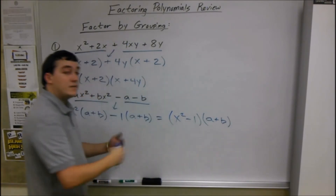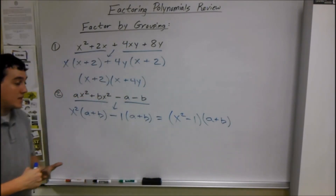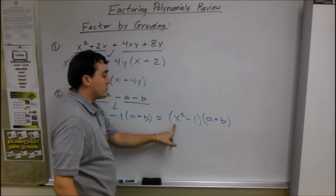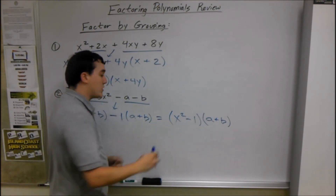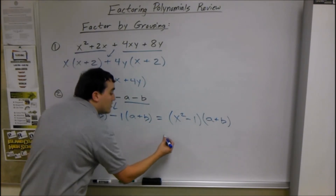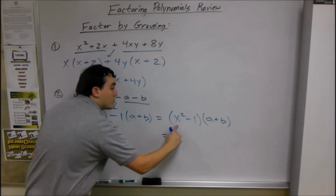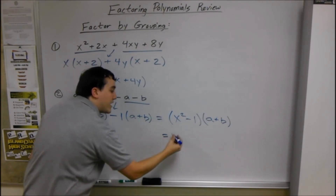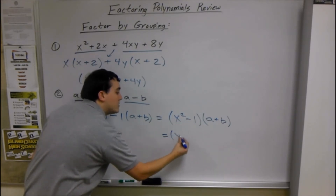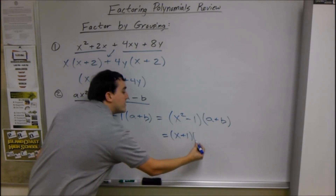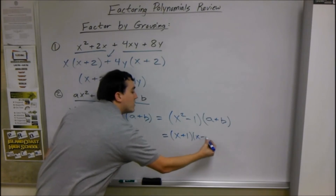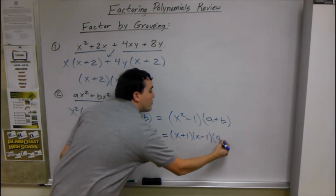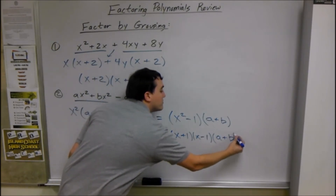These two parentheses have to be the same for this to work, so we get (x² - 1)(a + b). But if you can keep factoring you have to keep going — we can factor x² - 1 using the difference of squares. The square root of 1 is 1, so we get (x + 1)(x - 1). We can't do anything more with (a + b), so we just write that too: (x + 1)(x - 1)(a + b).